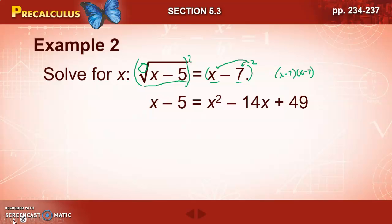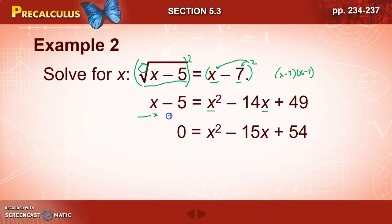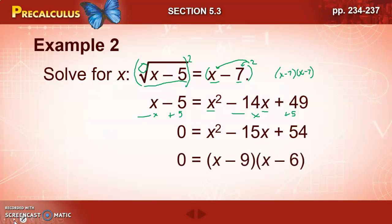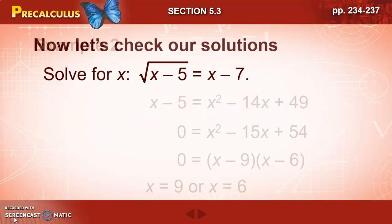From here we need to solve for x. We have a square term and a linear term, which tells us to set this equal to 0 and solve by factoring. We move the x and the negative 5 over, giving us 0 equals x² minus 15x plus 54. This quadratic is factorable: x minus 9 times x minus 6. By the zero product property, we set each factor equal to 0 and get x equals 9 or x equals 6. Since we squared things, we need to check for extraneous results — let's plug both back in and check.